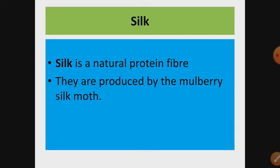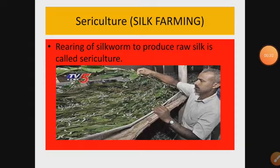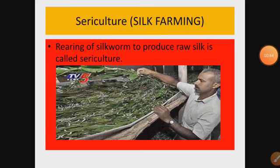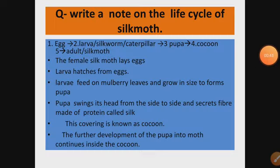Plant fibers are rich in cellulose. The next topic is silk farming — sericulture. Rearing or taking care of silkworms to produce raw silk is called sericulture.